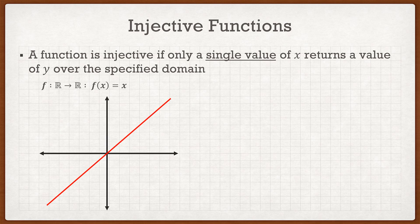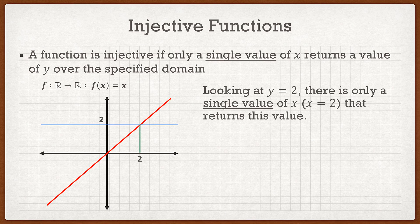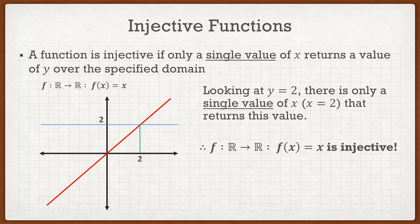For example, with f(x) = x, if we're interested in a y value of 2, there is an x value of 2 that gives us that y value. The key for injective functions is that only one value of x can return that value of y. This holds for any value — if we want y = -45, the only x that returns it is -45. So we can conclude that f(x) = x is injective.